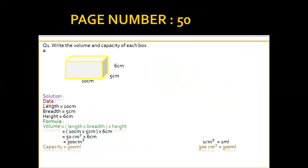Part A: length is 10 cm, height is 6 cm, breadth is 5 cm. Volume = length × breadth × height = 10 × 5 × 6 = 300 cm³. When converting to capacity, since one centimeter cube equals one milliliter, the capacity is 300 milliliters.